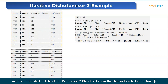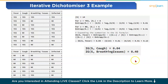Next, we calculate the information gain for the features cough and breathing issues using the same method. You can also use free online resources for calculating information gain. The information gain for cough is 0.04 and for breathing issues is 0.40. Since breathing issues has the highest information gain, it is used to create the root node, and our tree now looks like this.